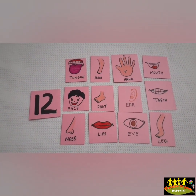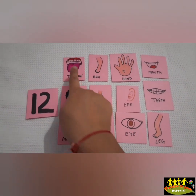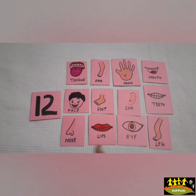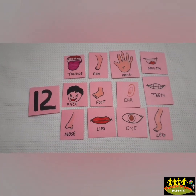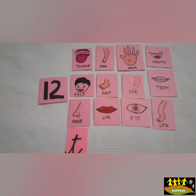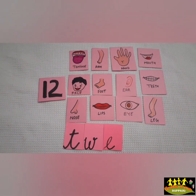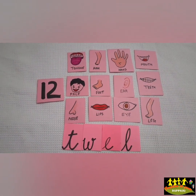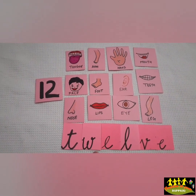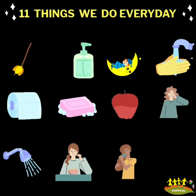These are parts of the body — you have learned them before. This is tongue, arm, hand, mouth, face, foot, ear, teeth, nose, lips, eye, leg. Now let's learn the spelling of 12: T-W-E-L-V-E. Twelve. Repeat after me: T-W-E-L-V-E. Very nice!